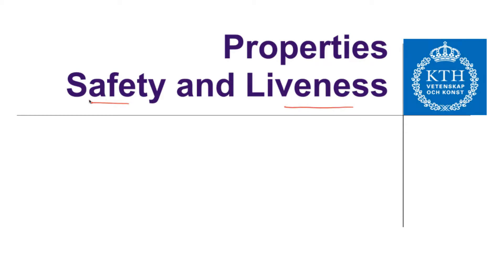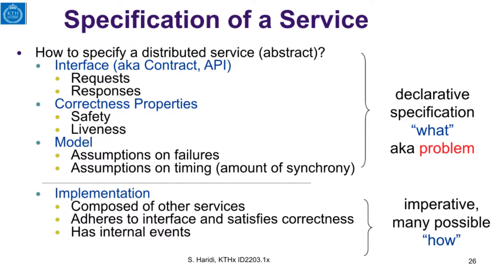Correctness properties of a distributed algorithm and the specification of a service will be described as properties of sequences of observable events of an execution. These properties can either be classified as safety or liveness properties. We are trying to describe the properties of a service and also the correctness properties of the algorithm implementing the service, and these properties will be either safety or liveness.